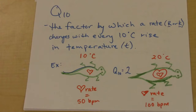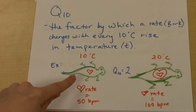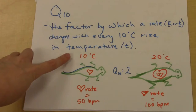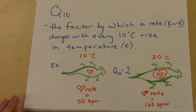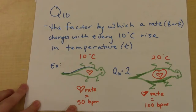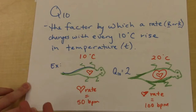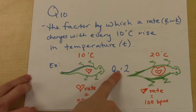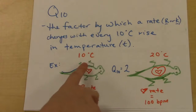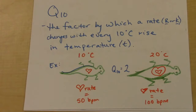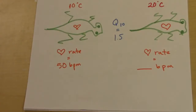That sounds obnoxious, so let's think about what it really means using my lizards. If I have a lizard whose heart rate is 50 beats per minute at 10 degrees Celsius, there's a number called Q10 which is the factor by which this rate is going to change if I increase the temperature by 10 degrees. So if Q10 is 2, then I multiply 50 times 2 to get a new heart rate of 100 beats per minute. By increasing the temperature just 10 degrees, because this is an ectothermic cold-blooded organism, its heart rate is going to double.